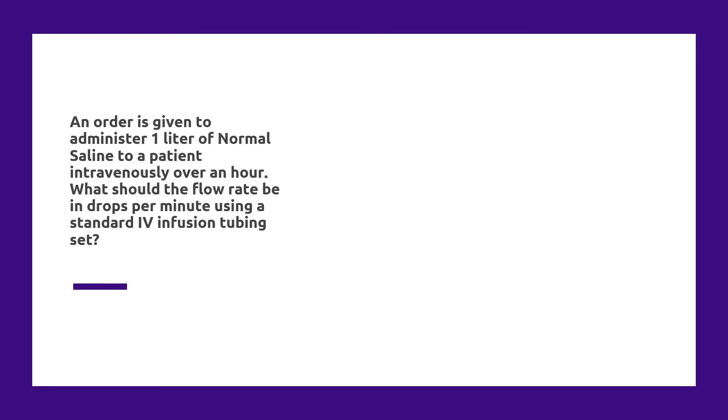Okay, so we're going to do one last variation of this question, and this time we're going to use drops per minute just to change it up. You get an order to give 1 liter of normal saline to a patient intravenously over an hour. What should the flow rate be in drops per minute using a standard IV infusion tubing set? Now, I don't mean to scare you with this question—I really don't think you need to memorize the drops per minute part, but we're just going to do this for illustration. If we assume that there's 15 drops per 1 milliliter, that's a typical standard IV infusion tubing set historically. This is what we're going to need to use as we do some of our conversions as we're converting from milliliters or liters to drops.